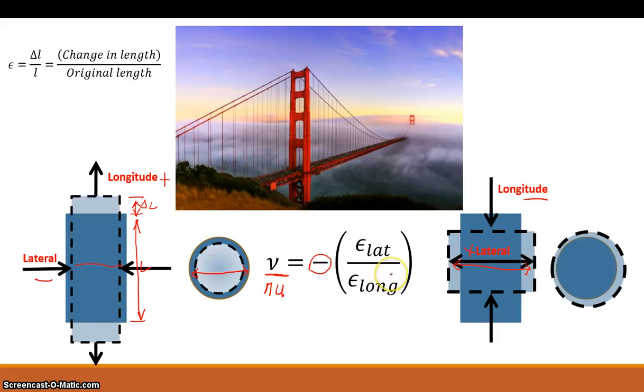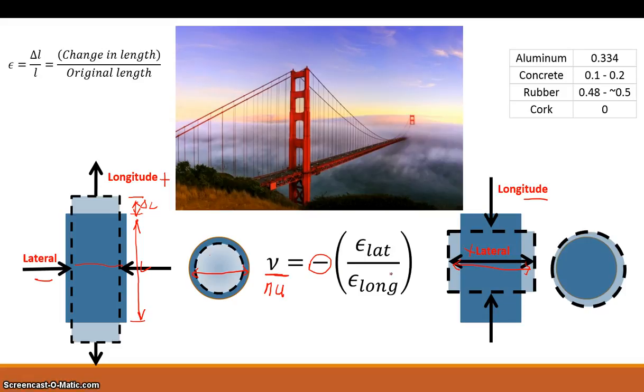The value of Poisson's ratio, represented by nu, the Greek letter nu, is going to be consistent based on the material. There's been a lot of research with civil engineering and mechanical engineering that have found that different materials have a very consistent ratio between the lateral strain and the longitudinal strain.